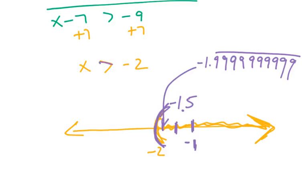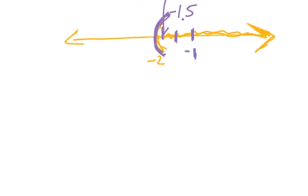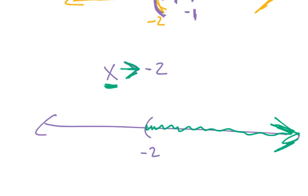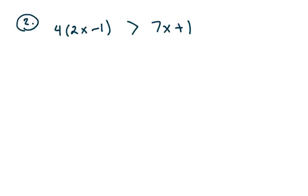If you don't have a line under, it's a parenthesis. One thing students struggle with is knowing which direction to shade. If you struggle with this, just think of the inequality sign as an arrow. If x is on the left side, the arrow points to the right, so shade to the right. Let's jump on to the next one.